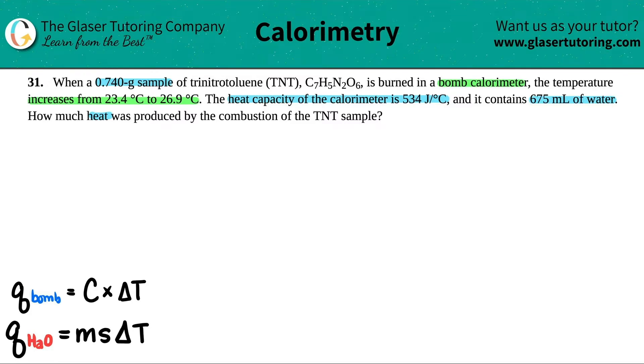Now just know that bomb calorimetry is a more heavy duty type of calorimetry in which they produce much more amounts of energy. And generally bomb calorimeters are used for combustion. So this organic molecule TNT is burned. That's combustion. Anytime that you have a hydrocarbon and you're burning it in oxygen, that's combustion. That's what bomb calorimeters do.